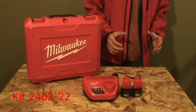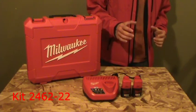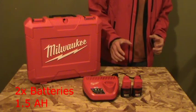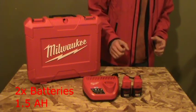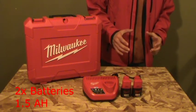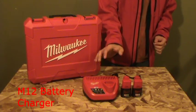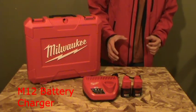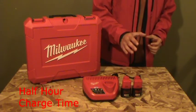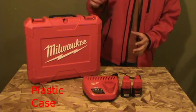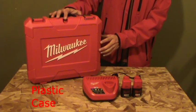If you buy the kit the model number for that is 2462-22 and it includes two red lithium battery packs rated at 1.5 amp hours and it also includes the M12 battery charger. These batteries charge in about half an hour which is relatively quick. It also includes a nice plastic case to store it all in.